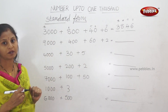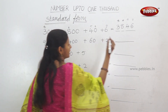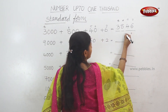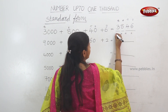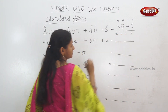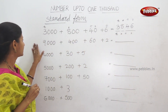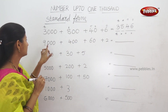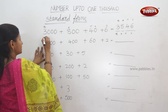So, this is standard form. The first place value: ones, 10s, 100s, 1000s. Which place values should we use? Ones, 10s, 100s, 1000s.